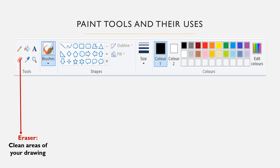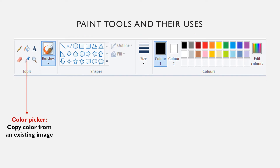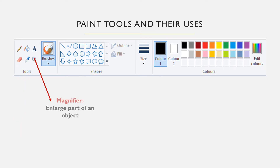One thing about the eraser tool is that the background color you have chosen will be shown on the area you clean up in your diagram or picture. The color picker tool is used to copy a color from an image or picture that exists within your workspace, and you can then apply that color to another area. When the color picker tool is used, it can add the picked color to the foreground or the background color, which you can then apply to the current image. Finally, the magnifier is used to enlarge parts of an object on the workspace — when you select the magnifier and click on the object, you zoom in or zoom out.